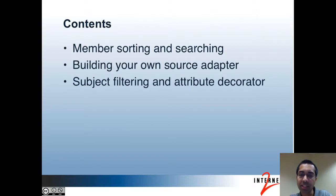Here are the topics I'll be covering. In part 1, I gave an introduction to the Subject API and talked about the various source adapters. In part 2, I did a demo of the JNDI source adapter and talked about batching and paging. In part 3, I talked about virtual attributes and internal attributes. In this part, I'll be talking about member sorting and searching, how to build your own source adapter, and finally a feature in Grouper that allows you to filter and modify subject data.